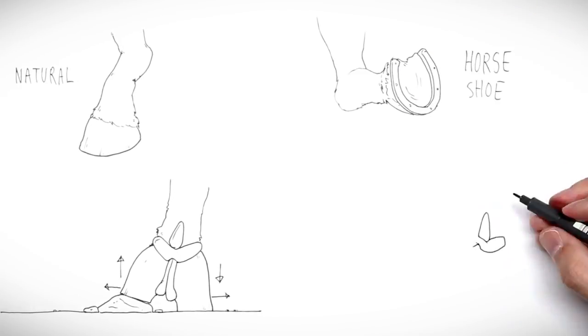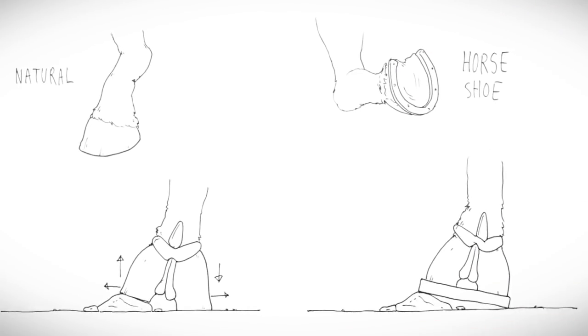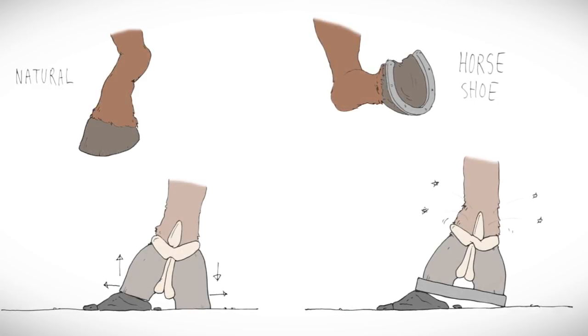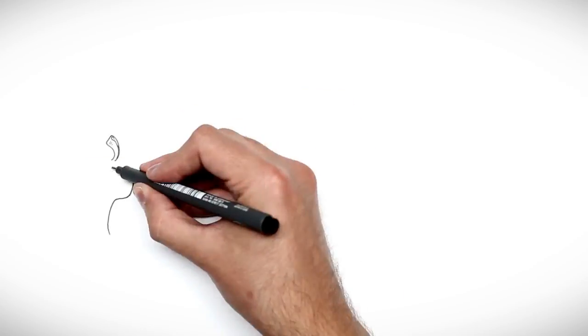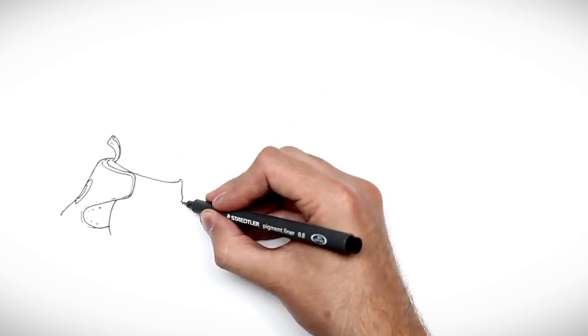With a horseshoe you lose the natural hoof mechanism. Horse owners therefore have to decide if they want to use a horseshoe or not. If you don't, you can use the Equine Fusion jogging shoe.